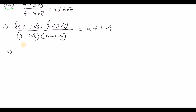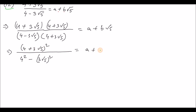Using the formula: a minus b into a plus b equals a squared minus b squared for the denominator, where a is 4 and b is 3 root over 5. For the numerator, a plus b into a plus b equals a plus b whole squared, so the numerator becomes 4 plus 3 root over 5, whole squared, equal to the form a plus b root over 5.